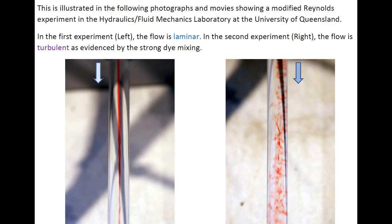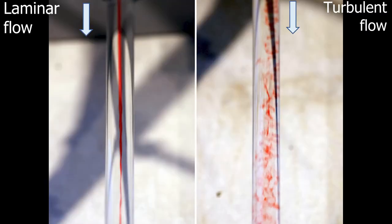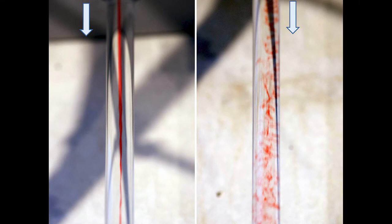This is illustrated in the following photographs and movies, showing a modified Reynolds experiment in the hydraulics laboratory at the University of Queensland. In the first experiment on the left, the flow is laminar. In the second experiment on the right, the flow is turbulent, as evidenced by the strong dye mixing.